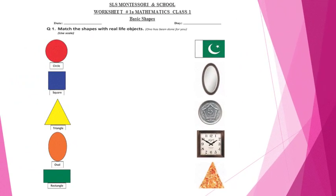On the right side of the page, real life objects are given: a flag, a mirror, a coin, a clock, and a slice of pizza.